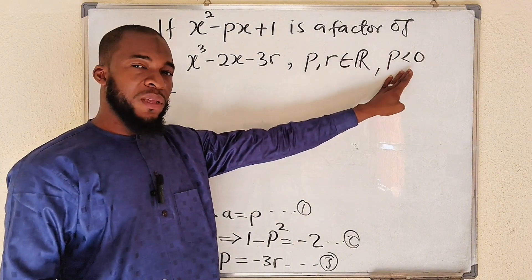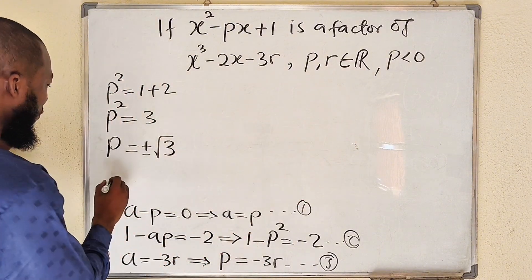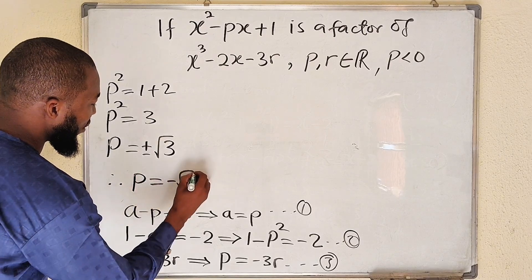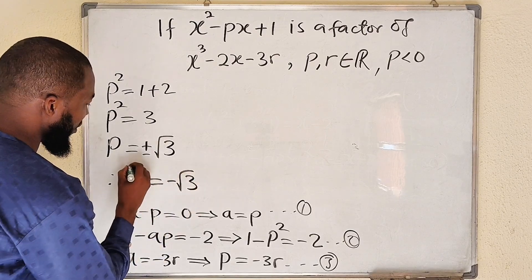If you take square root of both sides, but according to the question, p is negative. Therefore, p equals negative square root of 3.